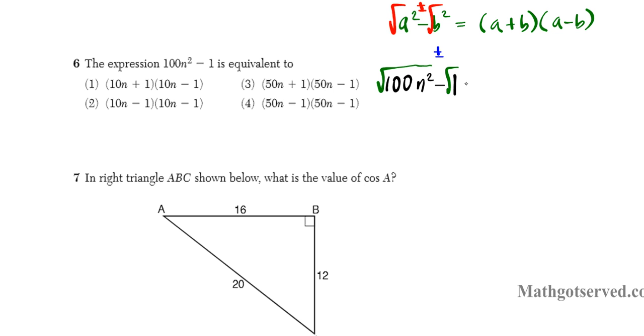The square root of 100n² - we're going to square root 100 which is 10, and the square root of n² is n. So 10n, let's do the plus first, plus 1 because the square root of 1 is 1. And then the difference of the square roots is going to be 10n minus 1. So our answer is clearly option 1.